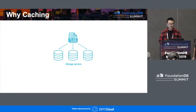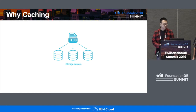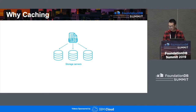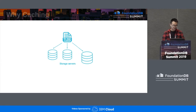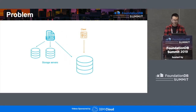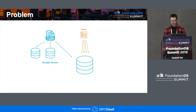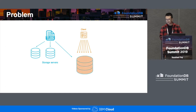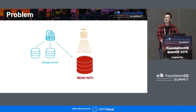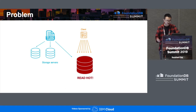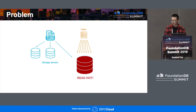Just like other systems, FoundationDB can suffer from read-hot traffic. To understand that problem, let's imagine we have a simple cluster with a bunch of storage servers happily serving requests. Imagine a bunch of clients all trying to access the same small key range hosted by one storage server team. When traffic is still moderate, load can be balanced between all servers nicely, but as we increase the traffic, that set of servers will eventually be overloaded and finally saturated because of the read-hot shard.